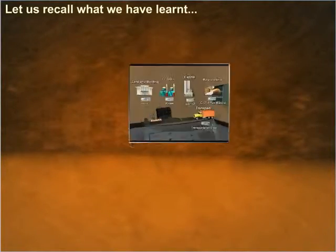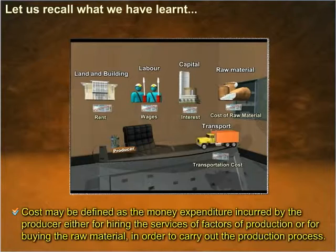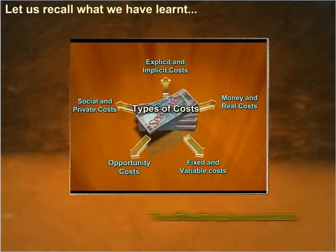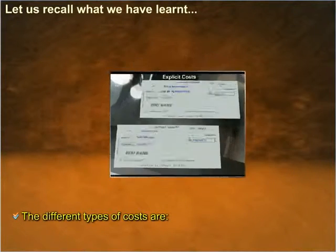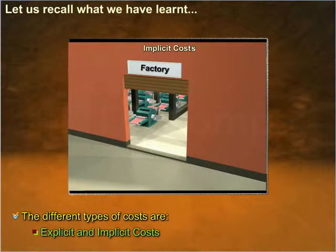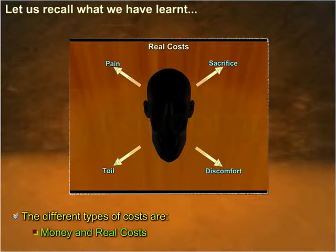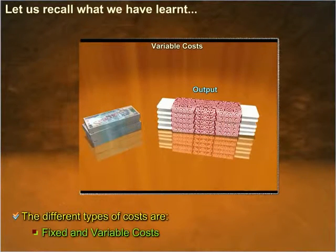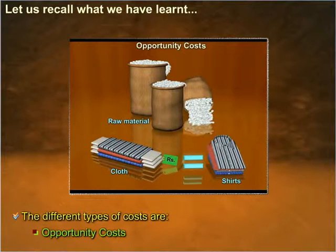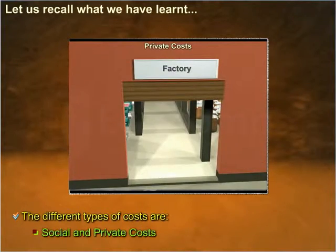Let us recall what we have learnt. Cost may be defined as the money expenditure incurred by the producer either for hiring the services of factors of production or for buying the raw material in order to carry out the production process. The different types of costs are: Explicit and Implicit Costs, Money and Real Costs, Fixed and Variable Costs, Opportunity Costs, and Social and Private Costs.